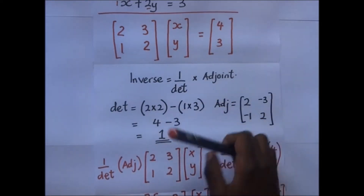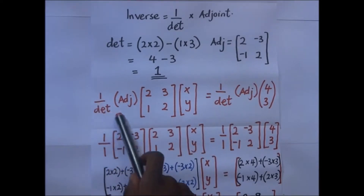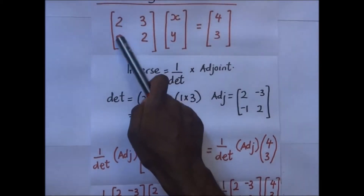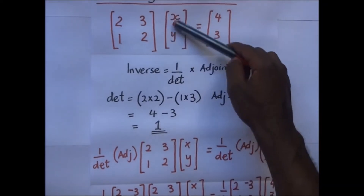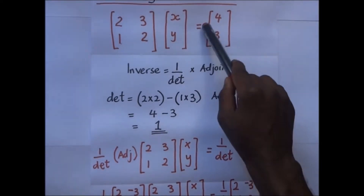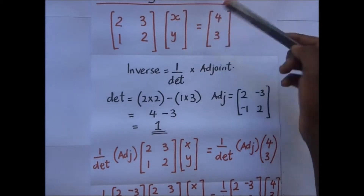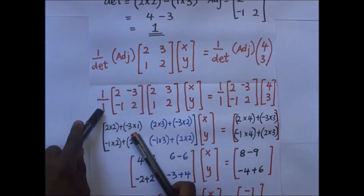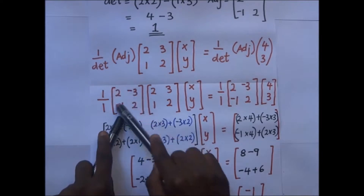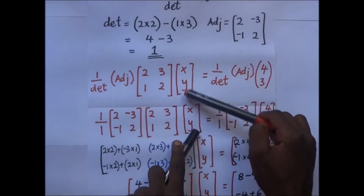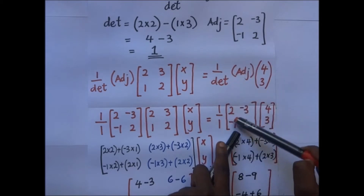With the determinant and adjoint found, we substitute into the inverse formula. In the next step we multiply the inverse — which is 1 over the determinant times the adjoint — by the original matrix times [x; y], and on the right side we multiply the same inverse times [4; 3]. So it becomes (1/1) × [2, -3; -1, 2] × [original matrix] × [x; y] = (1/1) × [2, -3; -1, 2] × [4; 3].